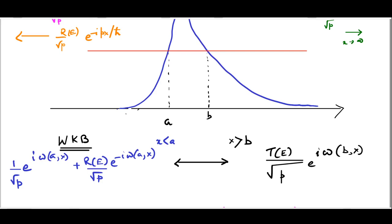Our strategy for tackling this problem using the WKB method will be as follows. We will start from the right-hand side where we have only one term — the transmitted term — and work backwards leftwards. We will cross B and enter the classically forbidden region using the connection formula for the turning point at B, then use the connection formula for the turning point at A to end up with an expression for the wave on the left-hand side for x less than A. We will then match this expression with the expected form — 1 over root p times e to the iW(a,x) plus R(E) over root p times e to the minus iW(a,x) — and read off the relationships between T(E) and R(E) and the incident amplitude.